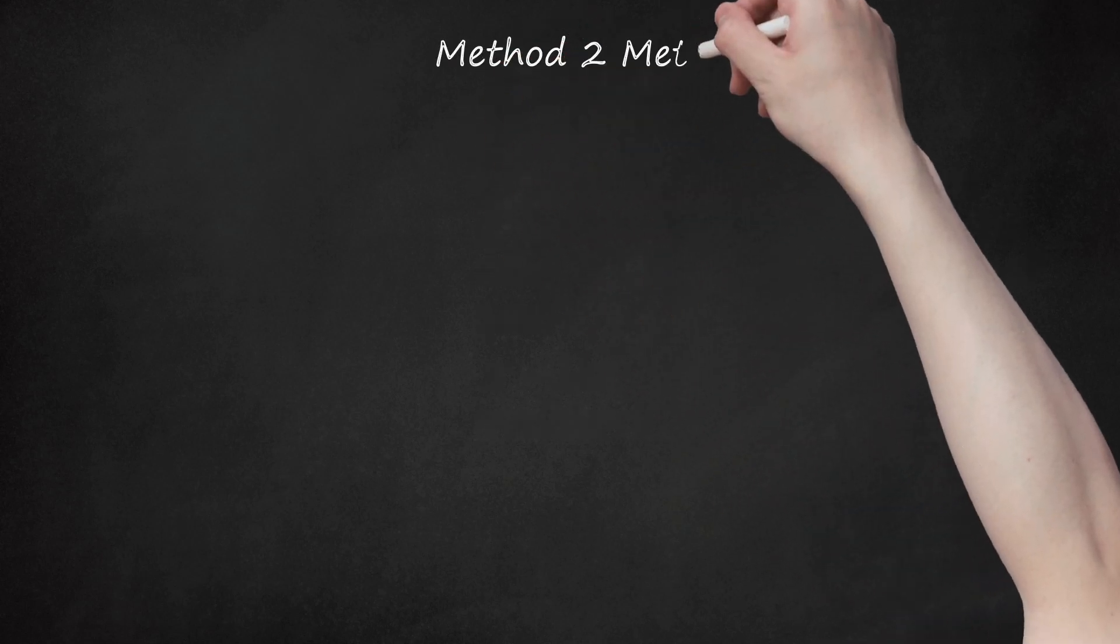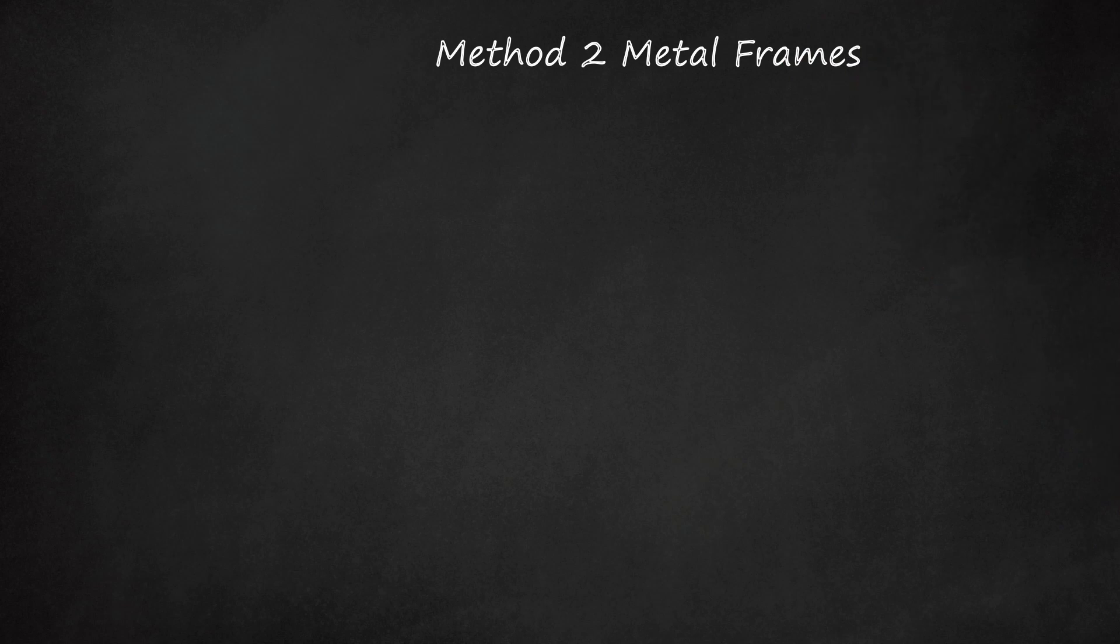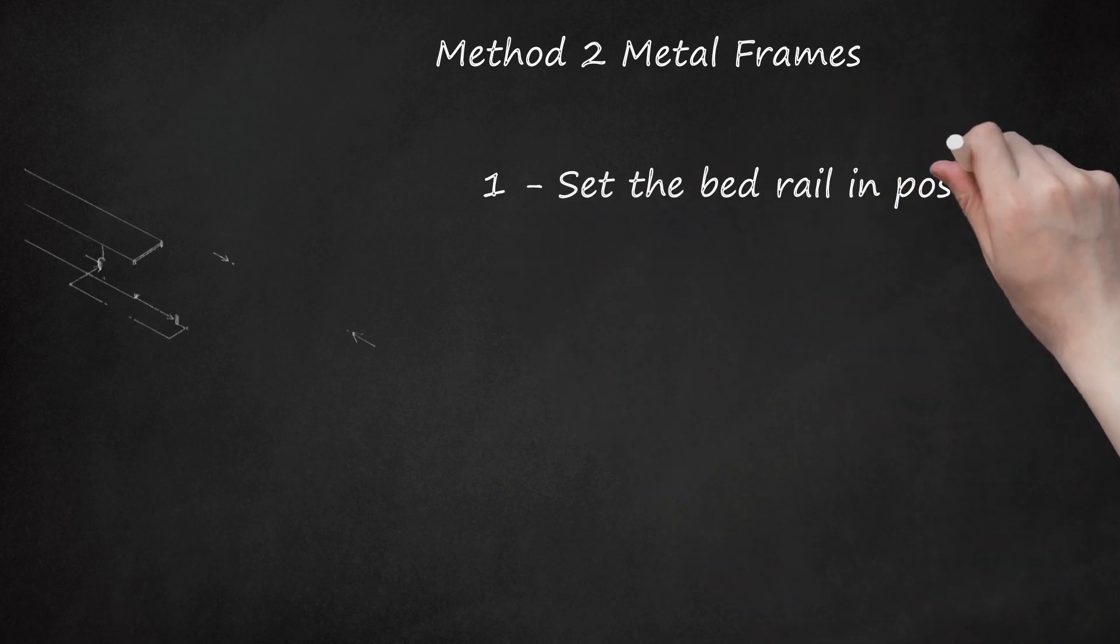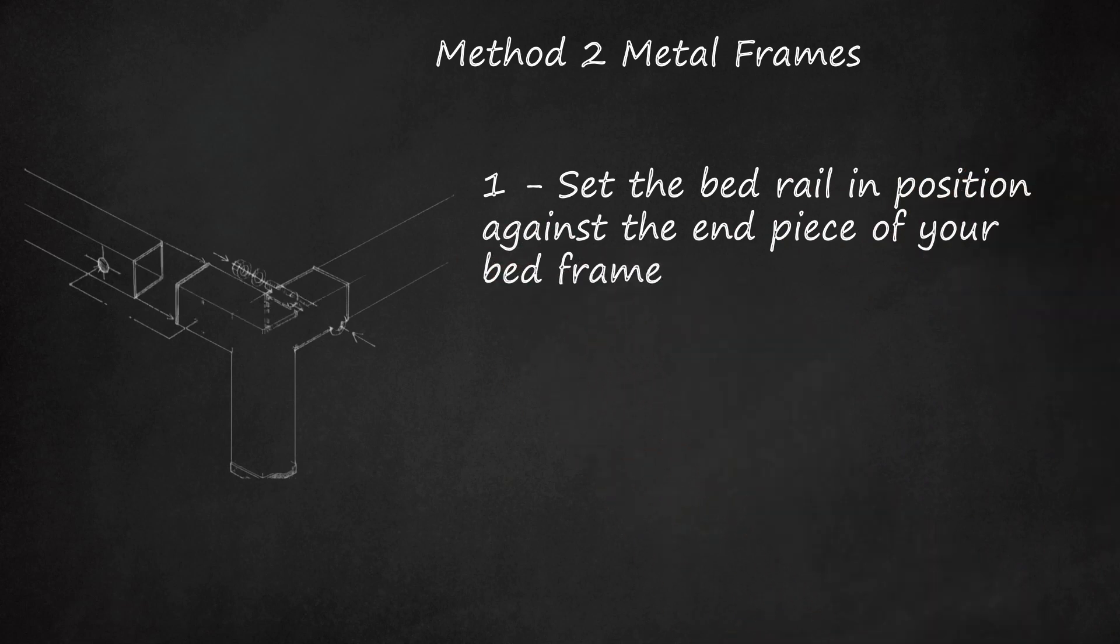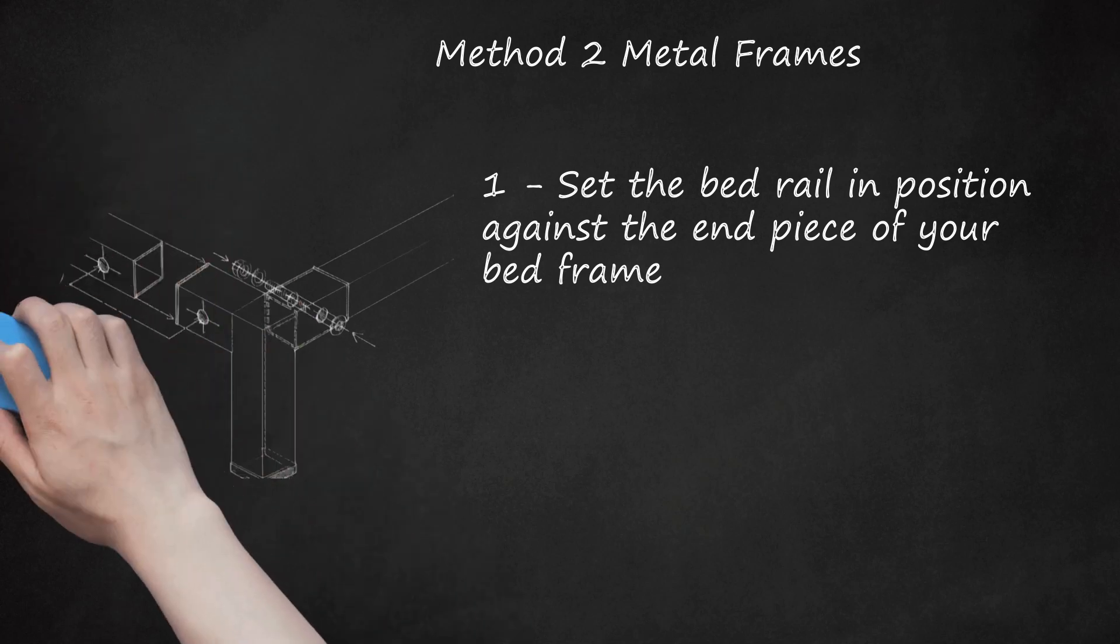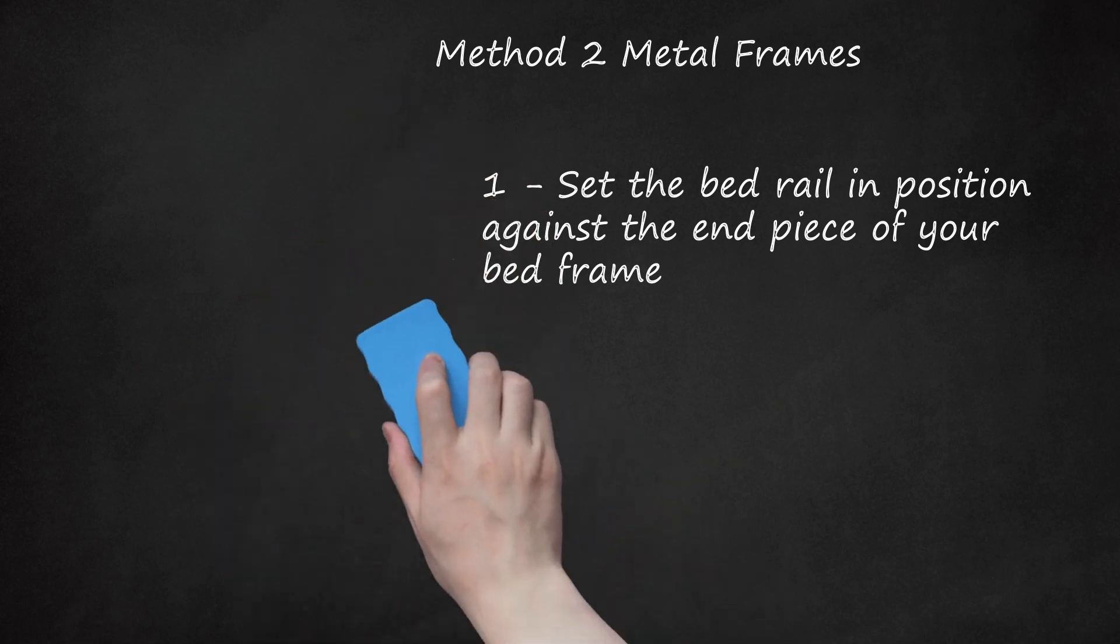Method 2: Metal Frames. Step 1: Set the bed rail in position against the end piece of your bed frame. Some frames will have a tab you settle a nub from the bed rail into. This should align the bolt holes in the rail and end piece, making them ready for your bolt.